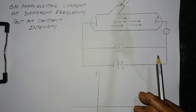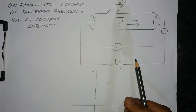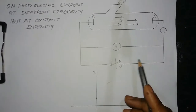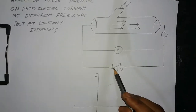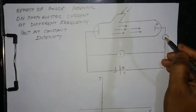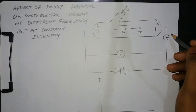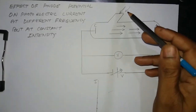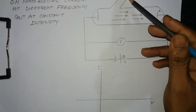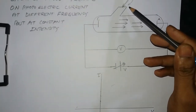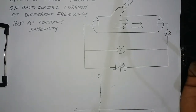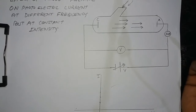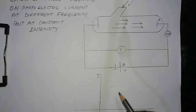We are studying the effect of potential on photoelectric current at a different frequency but at constant intensity. In this observation, we will vary V and change the frequency of light. The intensity remains the same — the number of photons per second is not changing.